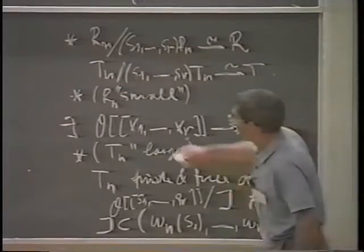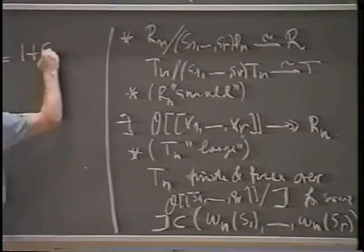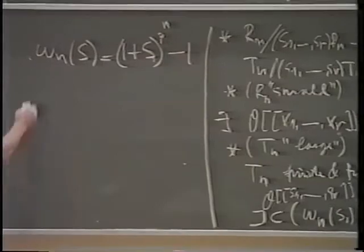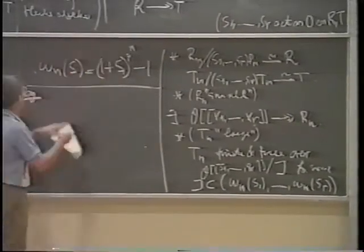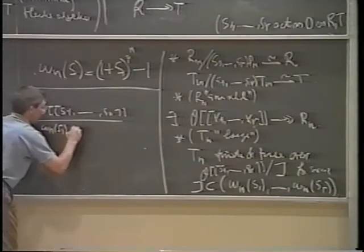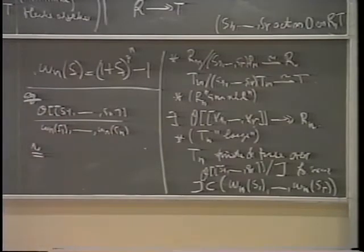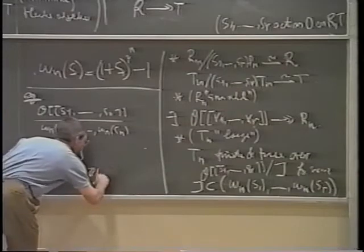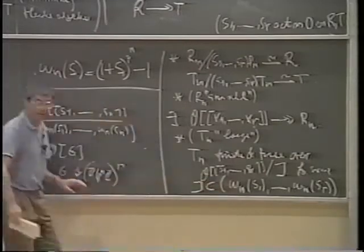Omega_N is just the Iwasawa theory shorthand for the following polynomial: omega_N(S) is (1+S)^{p^N} - 1. So if you've never seen this, if I take this algebra O[S_1,...,S_R] and divide it by that ideal, this is isomorphic to a group ring O[G], where G is a finite abelian group isomorphic to R copies of Z/p^N Z. That is the property of this ideal, and in fact that's how it will arise.